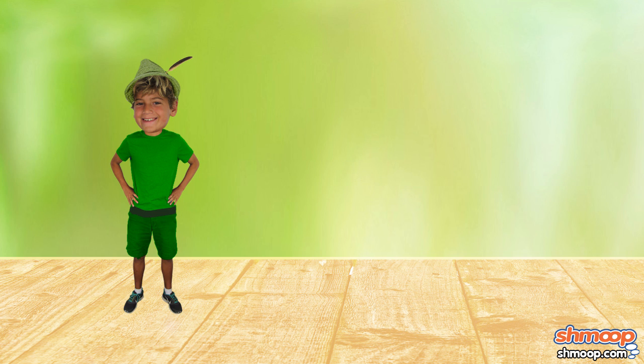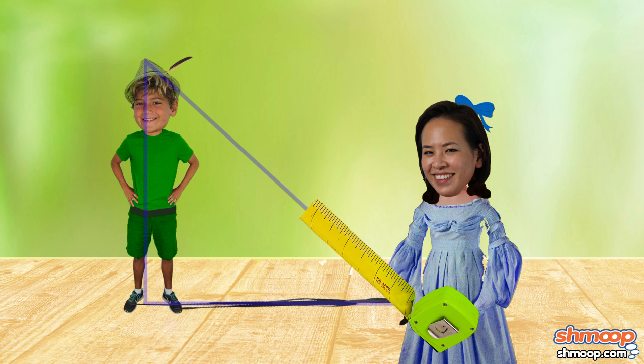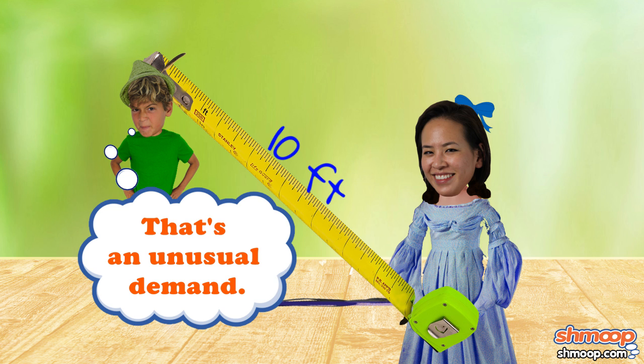Fortunately for Peter, he and his shadow form a perfect right triangle. He knows that Wendy wants the tippy top of his head to be exactly 10 feet away from the top of his shadow's head at all times.